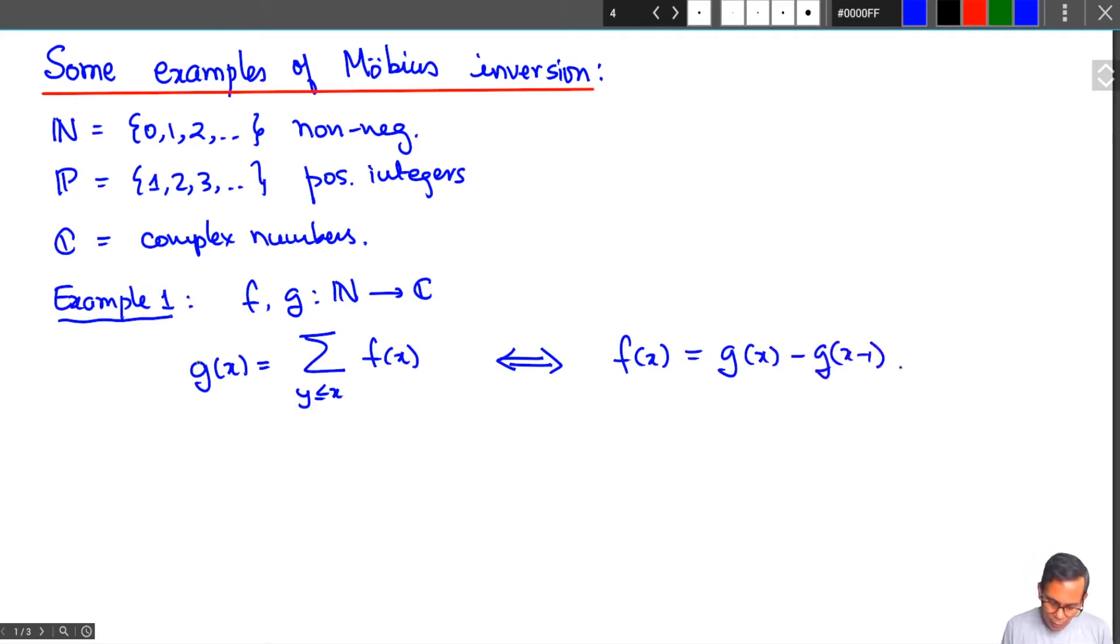This tells you how from this relation on the left hand side you can recover f or write f in terms of g as f(x) = g(x) - g(x-1). This is inverting the relationship based on inequality. And this is pretty easy to prove. g(x) is going to be f(0) + ... + f(x), g(x-1) is going to be f(0) + ... + f(x-1). All but this term here cancel out and so you get f(x).